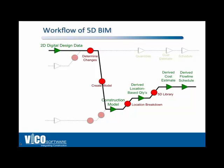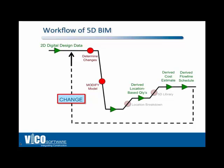What's exciting to me — and I watched this happen in the manufacturing industry 20 years ago — is that when something changes, you go back to the beginning of this loop and replay it, but you don't have to redefine the location structure. Those location structures are persistent in the Constructor and Constructor Office databases. You don't have to redefine the 5D library either — it's ready to be used on this project or the next one. So based on those changes, you modify your model and replay quantities, derived costs, and derived schedule. That's why you can turn this around so quickly.